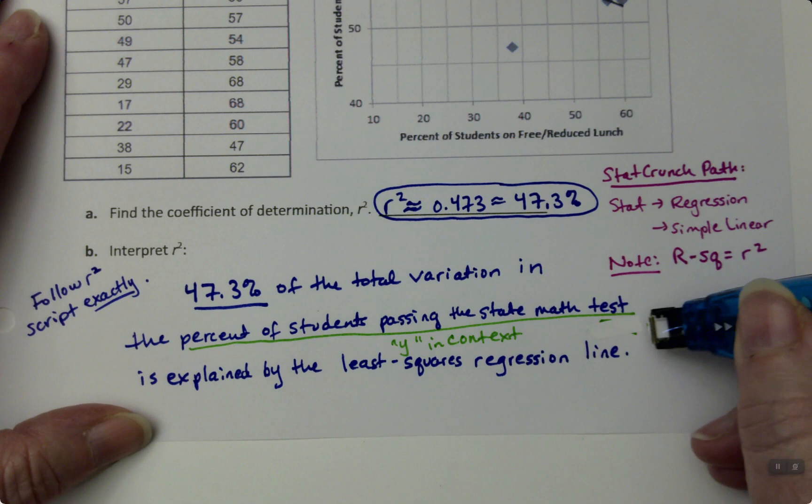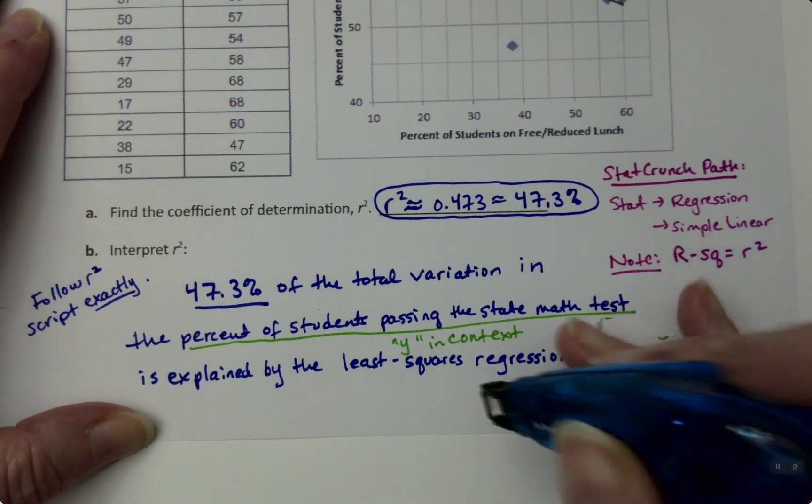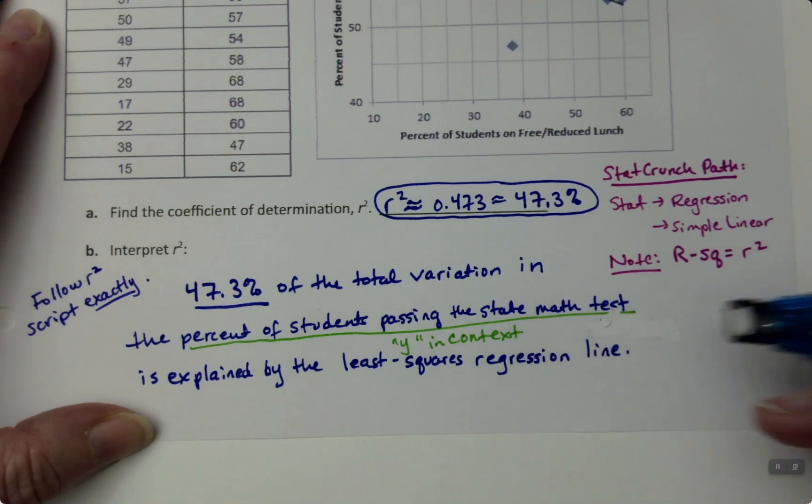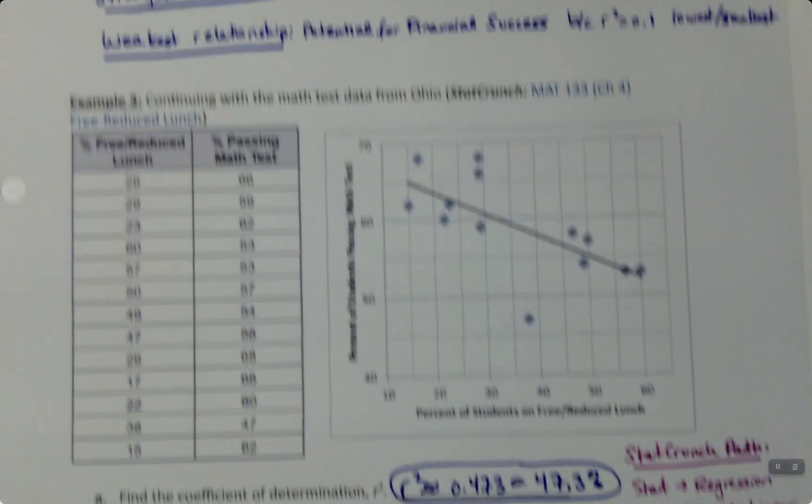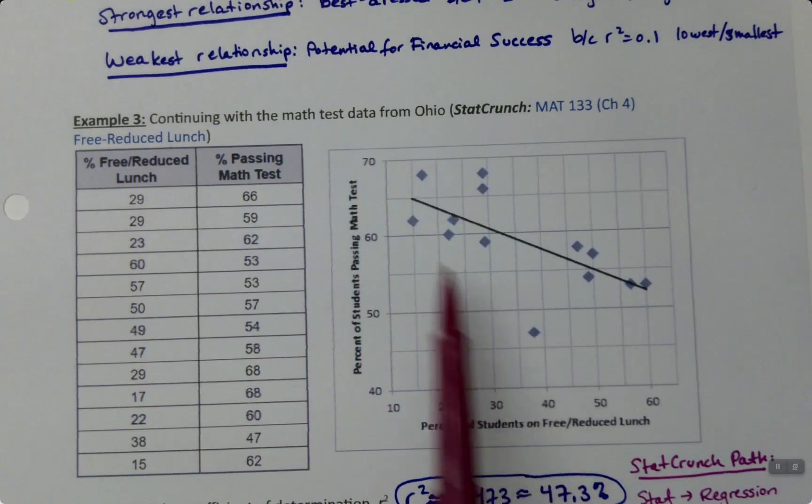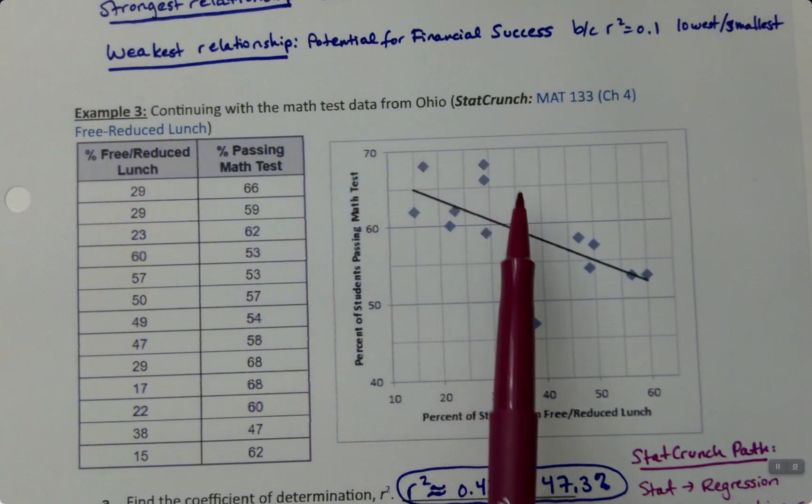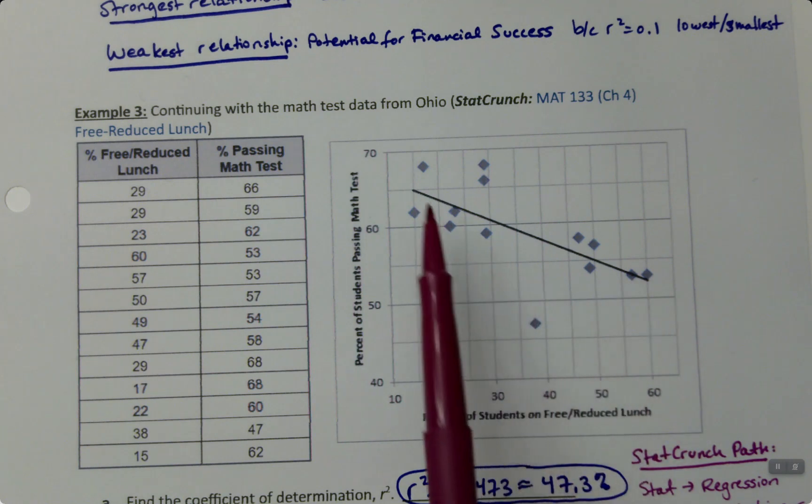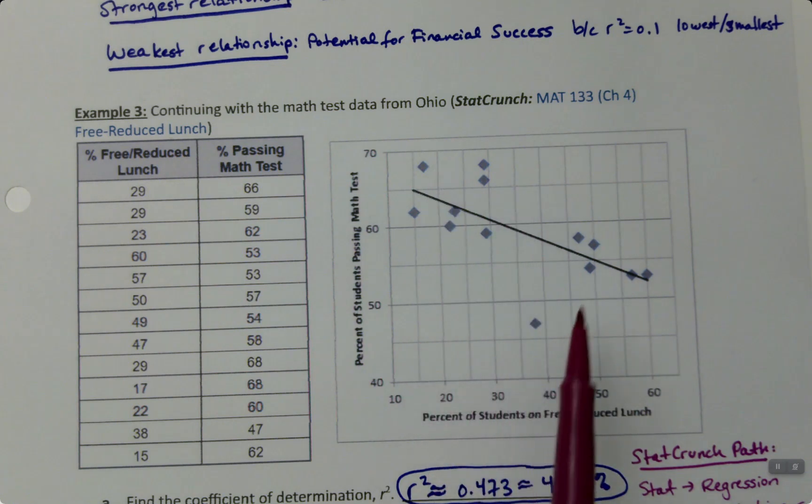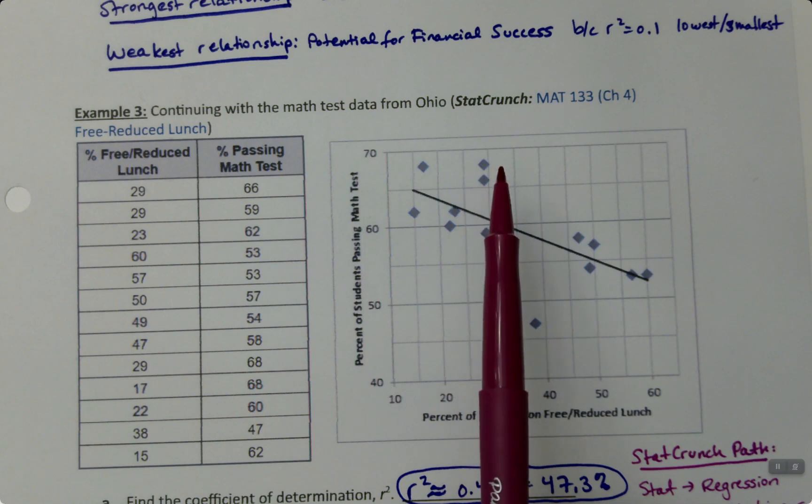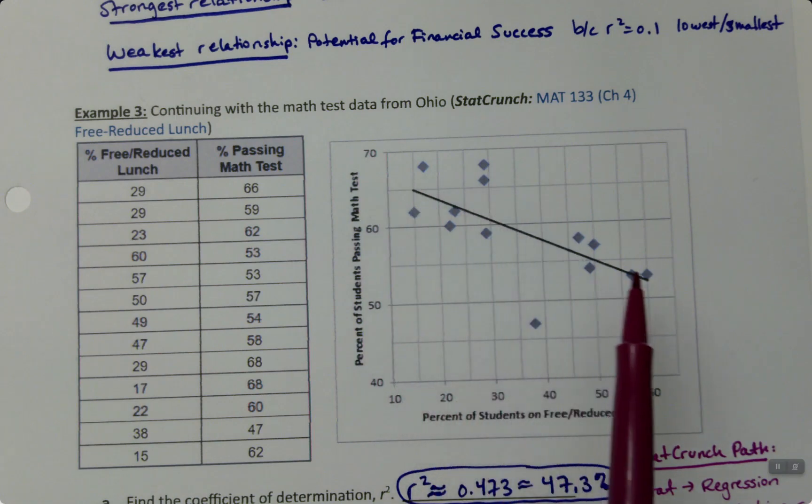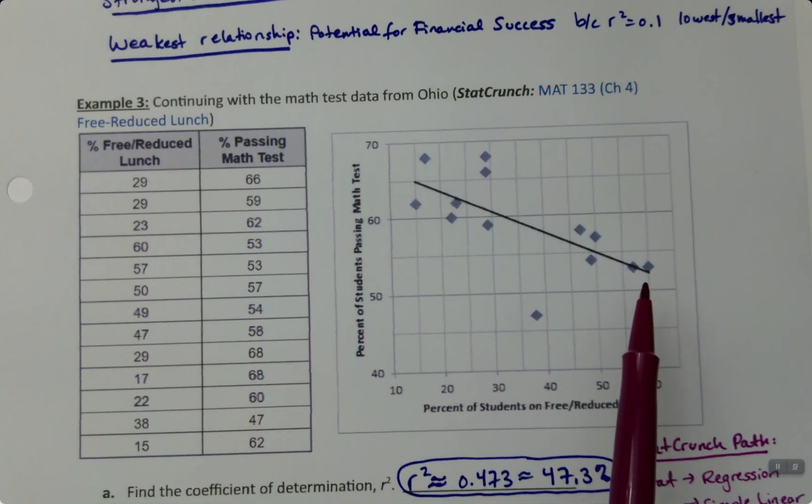Now, what in the world are they talking about? If you look at the graph, you can see the dots are all over the place. These are each representing a school. Some schools scored higher on the math test, some scored lower. The line is accounting for 47.3% of the variation in the Y values.